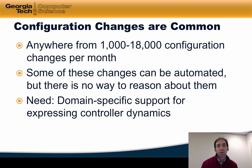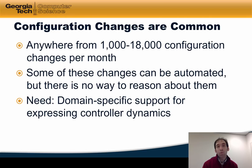Changes to the network configuration are common. Based on some studies that we've done in the past, we've found that a network might experience anywhere from 1,000 to 18,000 configuration changes in a single month. Some of these changes can be automated with scripts and other network management systems, but there's still no way to reason concretely about these changes. In particular, an operator has very little assurance that a particular configuration change would ultimately result in correct behavior. Network operators need domain-specific support for expressing the dynamics of a control program so that they can have better assurance that the network will behave as intended when a particular event, such as an intrusion, an authentication event, or a traffic shift occurs.